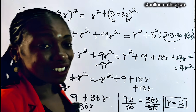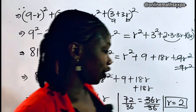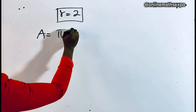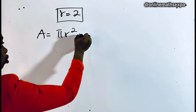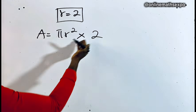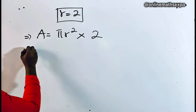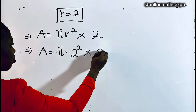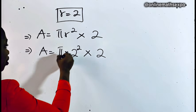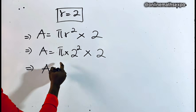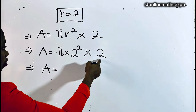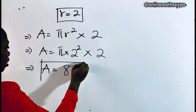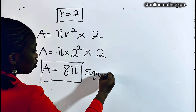Now that we have the radius, let's find the area of the two circles. Area equals π times R squared times 2. With R equals 2: area equals π times (2 squared) times 2 equals π times 4 times 2 equals 8π. So the total area is 8π square units.